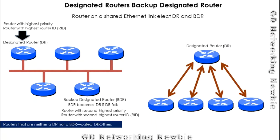After election, the routers form a hub-and-spoke structure for exchanging the link state database. The Designated Router is at the top, and the remaining routers communicate with it. Without a DR, all five routers would be responsible for sending their LSAs to every individual router — for example, each router would have to send its LSA to each of the other four routers individually.